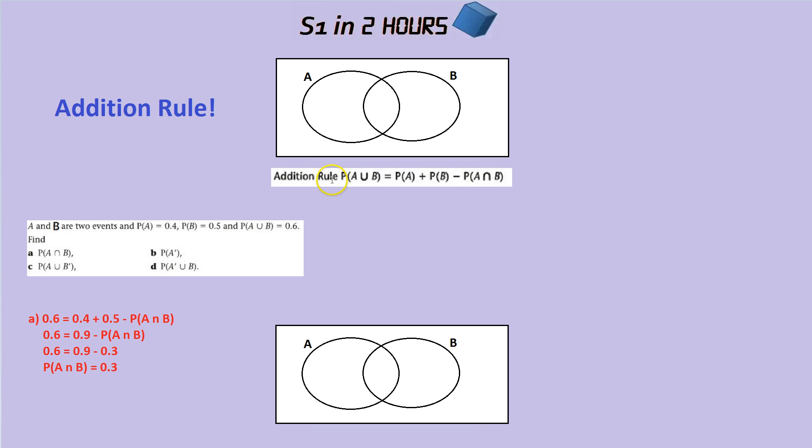So the addition rule says that the probability of A or B, which is all these three sections here, could be A, could be B, could be both, is equal to the probability of A which is this bubble here, plus the probability of B, but then take away the overlap.